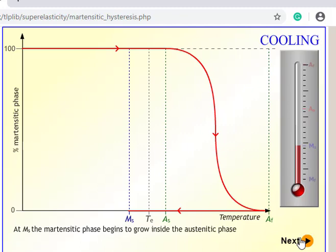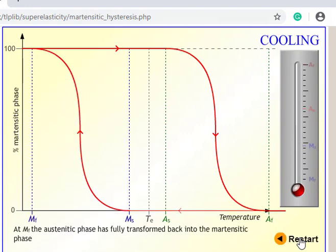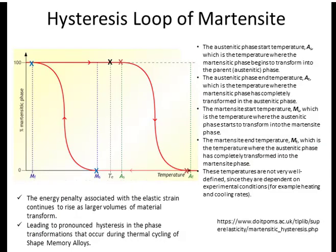Now starting the cooling down of this sample: at Ms the martensitic phase begins to grow inside the austenitic phase, and at Mf the austenitic phase has fully transformed back into the martensitic phase. This completes the hysteresis loop for any martensitic transformation. You can carry out this demonstration from the provided link. From this, you will see there is a fixed As, Af, Ms, and Mf temperature depending on whether you are heating or cooling the sample.